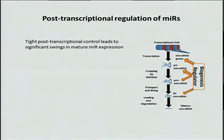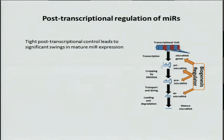The processing machinery includes canonical biogenesis regulators, DROSHA and DICER. These are non-sequence-specific regulators, but they also include sequence-specific regulators. We believe that these are in the hundreds, but only about 10 of them are known.